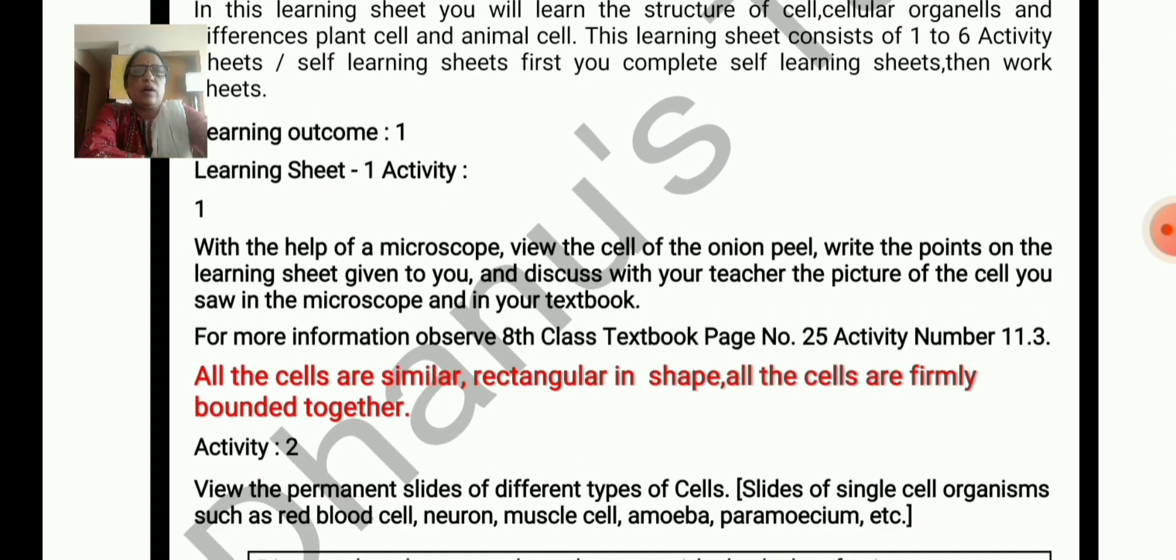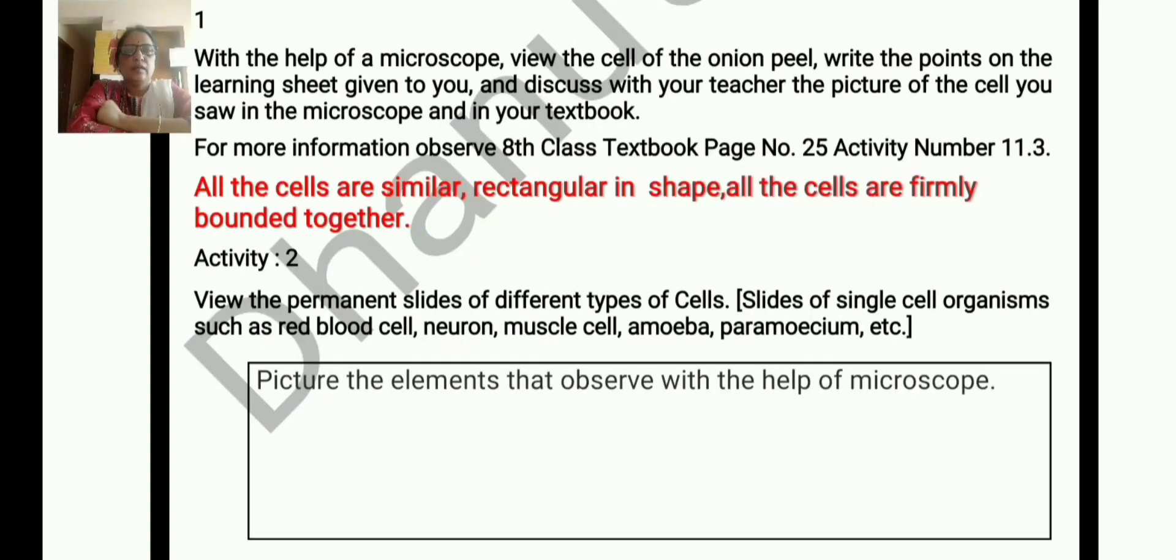Learning outcome 1, learning sheet 1, activity 1. With the help of a microscope, view the cell of the onion peel, write the points on the learning sheet given to you and discuss with your teacher the picture of the cell. The picture of the microscope, you saw the microscope in your textbook. All the cells are similar and rectangular in shape and all the cells are firmly bounded together.